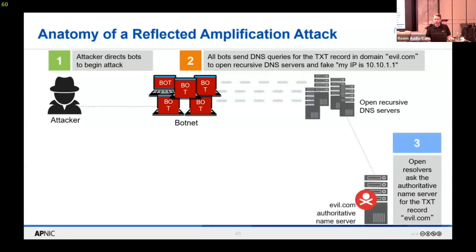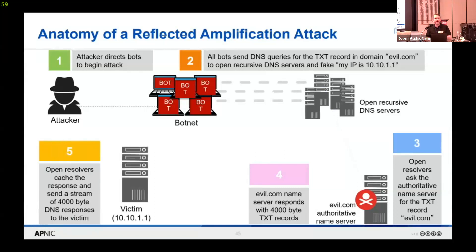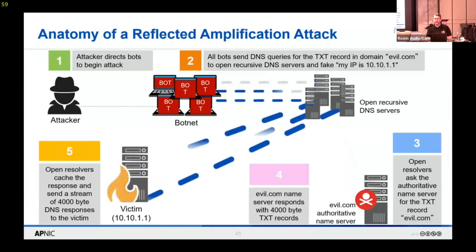The open recursive DNS servers talk to the authoritative name server, which is controlled by the attacker. The authoritative name server replies with a very large TXT record, which is then cached by the open recursive servers. They now think they are replying to the source of the request, but that is actually the forged IP address of the victim. So now you have the bots sending many requests, and the DNS servers sending much larger replies directed down to the victim.